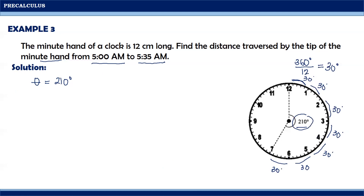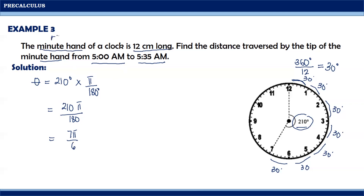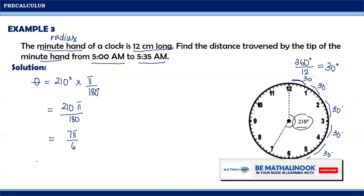Going back to this problem, since this is again in degree measurement, we need to convert the given angle into radian measure. To convert 210 degrees into radian, we multiply it by pi over 180 degrees, giving us 210 pi over 180. Writing this in lowest terms, we get 7 pi over 6. Moreover, it was also given that the minute hand is 12 cm long, and we can consider the minute hand to be our radius. So, r is equal to 12 cm.